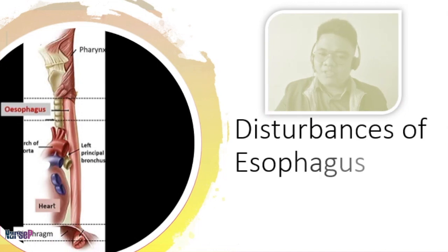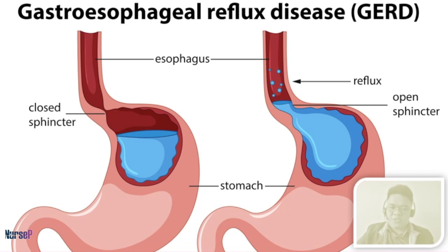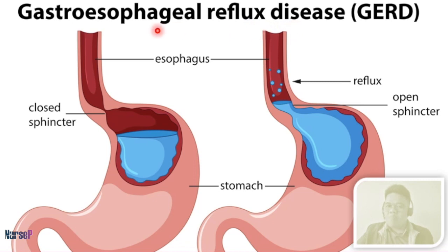Now, let's talk about the disturbances of your esophagus. The first disorder that we'll be talking about is your gastroesophageal reflux disease. The description of this disease lies on its name — there is a reflux of the acid content from the gastro, which refers to your stomach, going towards the esophagus.